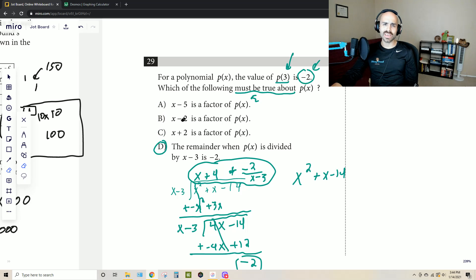Yeah I could create a polynomial where indeed x minus 5 is a factor and it still gives me an output of negative 2 when I put in 3, but that polynomial, whatever it is, would still actually give me a remainder of negative 2 if I divided it by x minus 3.